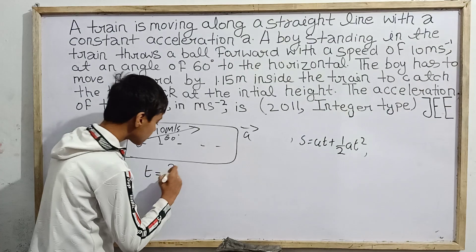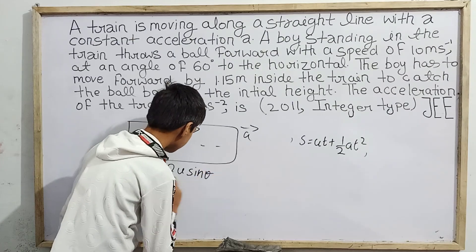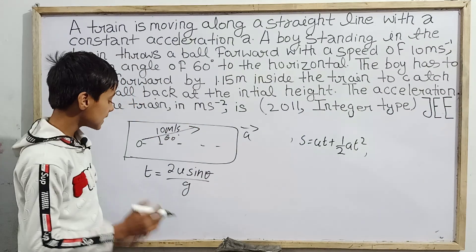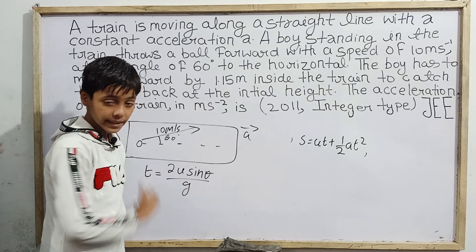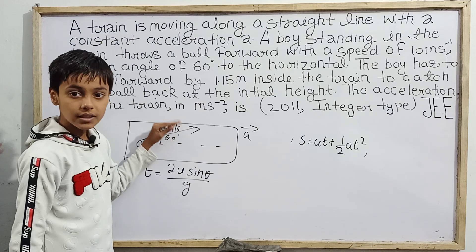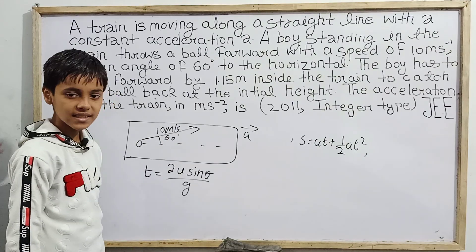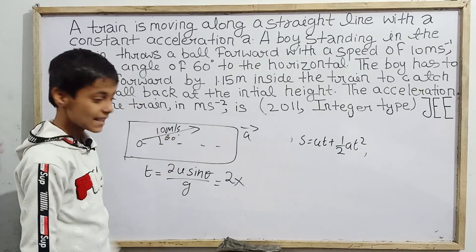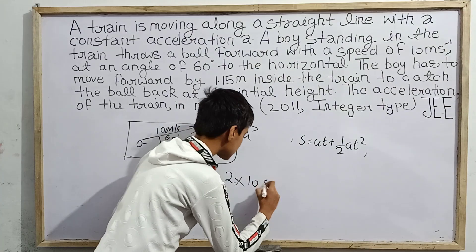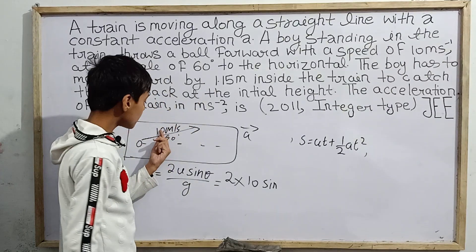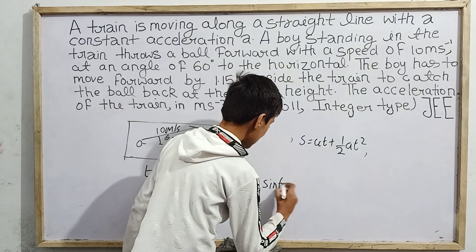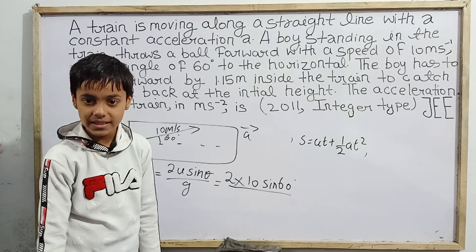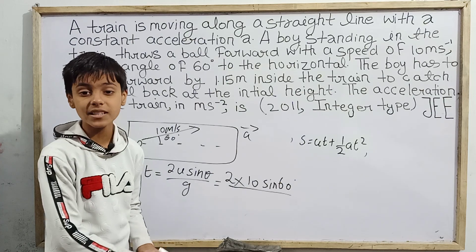The time of flight is T = 2u sinθ / g. This is an important formula where θ is the angle with the horizontal. Substituting values: T = 2 × 10 × sin 60° / g. The angle is 60°, so sin 60° applies. For g, we know it is 9.8 m/s², but we'll approximate it as 10 m/s² to simplify calculations.